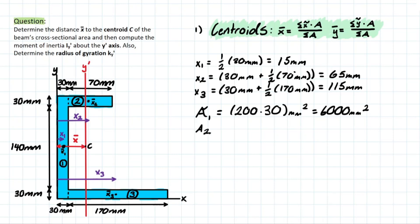Area two and area three are going to follow the exact same principles. So we have 30 times 70 for area two, giving us 2,100 millimeters squared. And then same for the bottom, which is 30 mil times 170 this time, which is going to give us 5,100 mil squared. Now let's plug this into the formula and see what we get at the end.